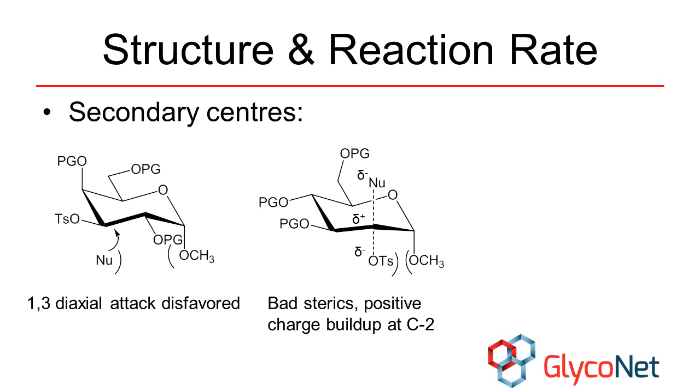Displacements at carbon-2 are slow, especially for axially-oriented glycosides. There are two reasons for this. First, it creates unfavorable steric interactions between the anomeric group and the departing leaving group.